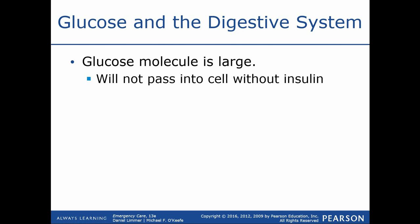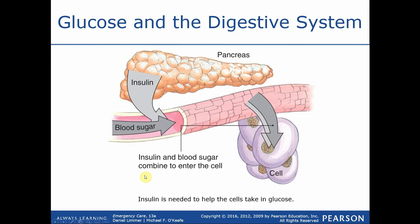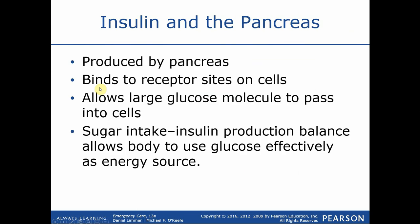The glucose molecule itself is relatively large and too large to permeate through the cell wall on its own. As a result, it utilizes something called active transport, which uses insulin. Insulin is produced by the pancreas, pumped into the bloodstream, and binds itself to the cells, opening a little door to allow the larger glucose molecule to enter. Type 1 diabetes does not utilize insulin appropriately, so the glucose floating through the blood vessels is unable to be absorbed and used for energy purposes.